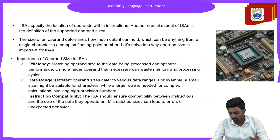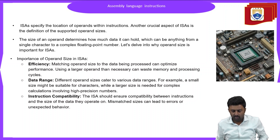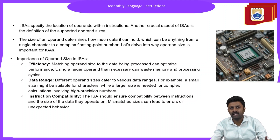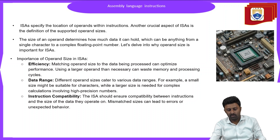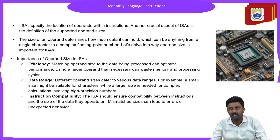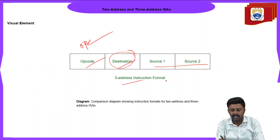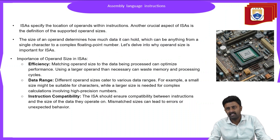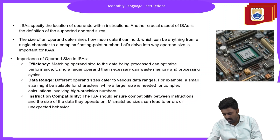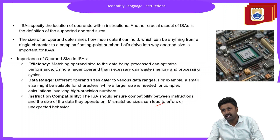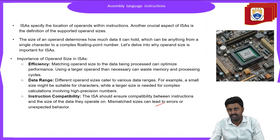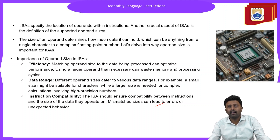The instruction set architecture specifies the location of operands within the instruction. Whatever architecture we develop for the computer will indicate the location of the operands mentioned in the code. Another crucial aspect of the ISA is the definition and support of operand sizes. The size of an operand determines how much data it can hold — for example, an 8-bit register will hold 8 bits of data.